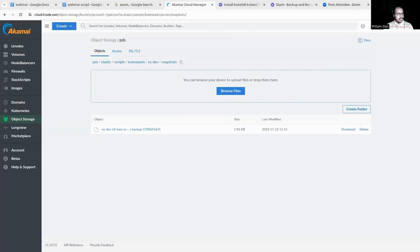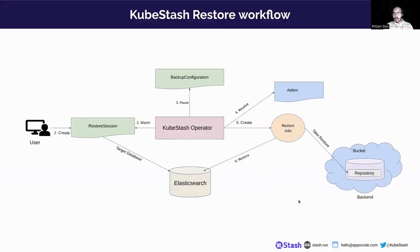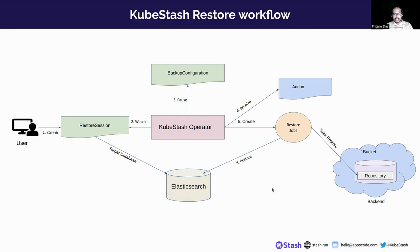Now I will explain the restore. After taking a backup, there can be a disaster situation. When restoring, the user has to create a RestoreSession. This RestoreSession will contain necessary information about the target DB and the data source, which includes the repository information and the snapshot name. KubeStash operator will watch the RestoreSession, pause the BackupConfiguration if it exists, resolve the add-on, and create a restore job to execute the Elasticsearch-specific restore process.